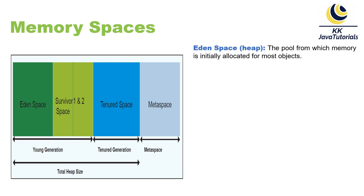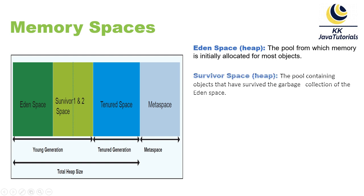Eden space is the part of heap from which memory is initially allocated for most objects. When you create any object using the new keyword, that object initially gets created in the Eden space. So Eden space is where objects are initially created, and it is part of the heap itself.